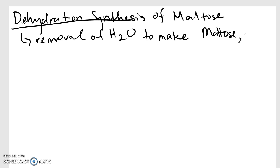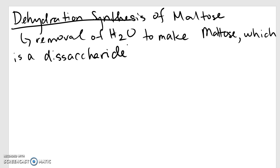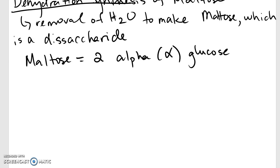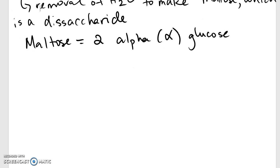Maltose, which is a disaccharide. Disaccharide means two sugar molecules together, and for maltose, it is made up of two alpha — and remember that is the sign for alpha, like a weird looking fish — two alpha glucose. This means we're going to be connecting two alpha glucoses together in the formation of maltose.